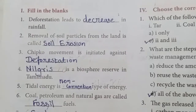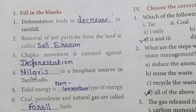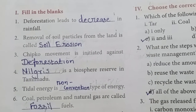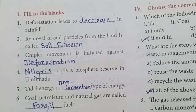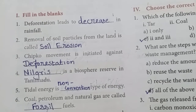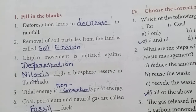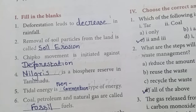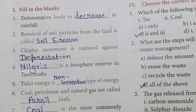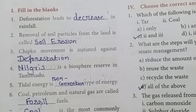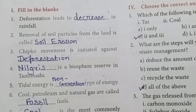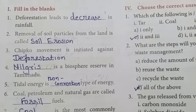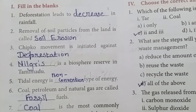Fill in the blanks — first one: deforestation leads to decrease in rainfall. Deforestation means cutting of trees from the forest. More plants and trees bring more rainfall, so cutting trees decreases rainfall. Second: removal of soil particles from land is called soil erosion. Third: Chipco movement is initiated against deforestation.